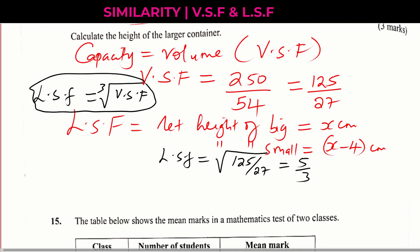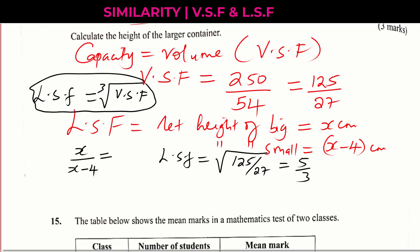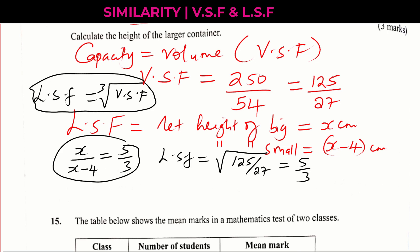Here, 5 represents the height of the bigger container and 3 represents the height of the smaller. Since we let the height of the bigger container be x, the height of the bigger container — x centimeters — divided by the height of the smaller one, x minus 4, should give us the linear scale factor, which is 5 over 3, bigger over smaller. When we work out this proportion, we'll be able to get the height of the larger container.